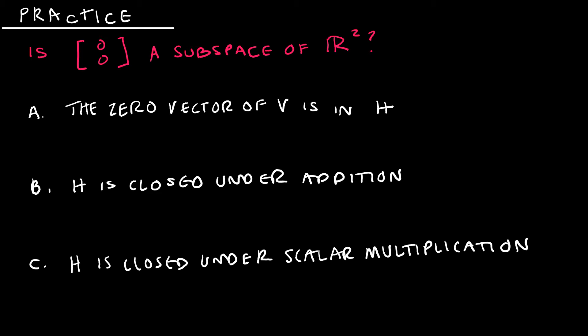Here's a fairly straightforward practice question. Notice I have (0, 0), which is the zero vector, and I'm asking, is this zero vector a subspace of R2? So essentially I'm saying that H is only the zero vector. The zero vector of V is in H - yes, because the zero vector is H, and so obviously that is in H. H is closed under addition - if I take the zero vector plus the zero vector, I get the zero vector, which is in H, and therefore it is closed.